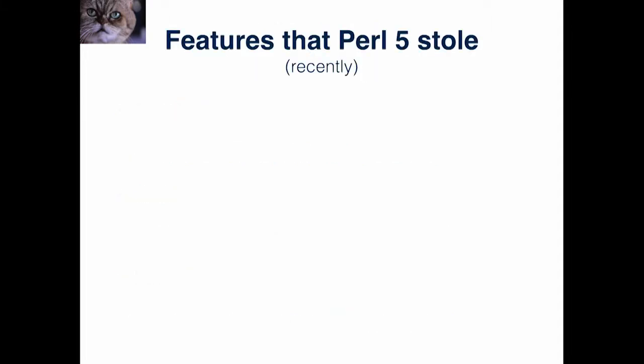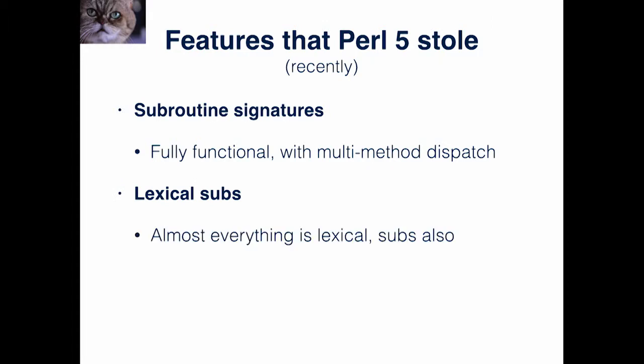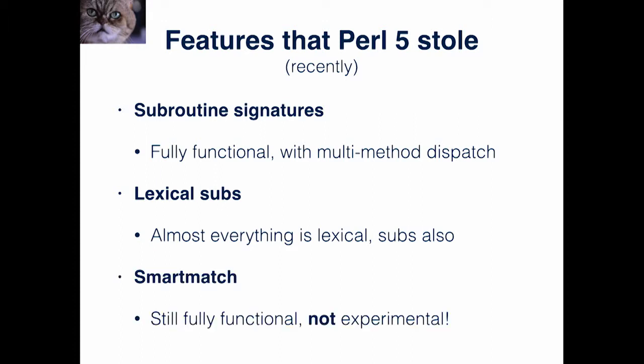So what are the features that Perl 5 stole recently? Subroutine signatures — well, in Perl 6 they are fully functional and not like the 20% that you have now. And they also work on methods with multi-method dispatch. Lexical subs — everything is lexical almost in Perl 6, so subs are also lexical. And smartmatch — well, it's not experimental in Perl 6.